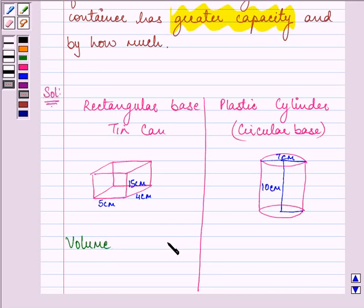Here it is in the shape of a cuboid, right? So the formula will be length into breadth into height. Here this is a cylinder, so its volume will be pi r squared h.